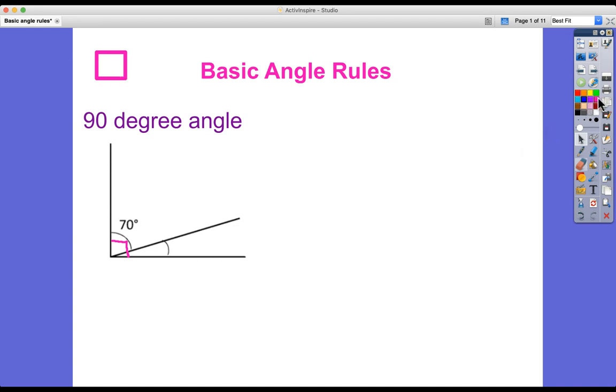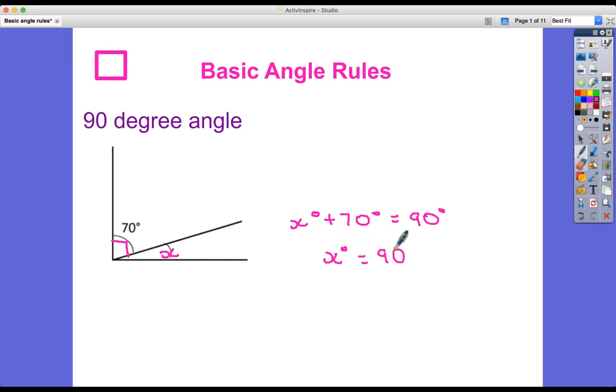And so I already know that part of that right angle is 70 degrees. What would I need to add on to 70 degrees to get 90 degrees? I could do it algebraically as well. I could show that if this is x, then x degrees plus 70 degrees equals 90 degrees. And so I could do this really thoroughly and say that this is 20 degrees.